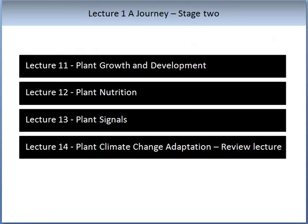In the second stage of this subject, you will learn about how the plant uses the above processes to grow and develop — Lecture 11 — how they use nutrients — Lecture 12 — and how they control growth and development with sophisticated signals called hormones — Lecture 13. These hormones also aid in defence. This knowledge will be brought together in a concluding lecture where we will introduce how plants might respond to changes of future climate conditions — Lecture 14.